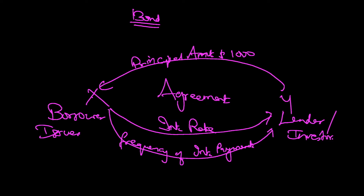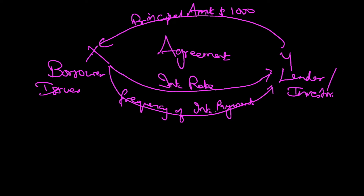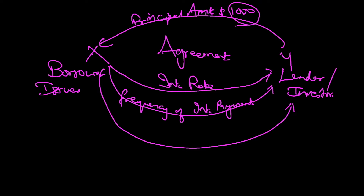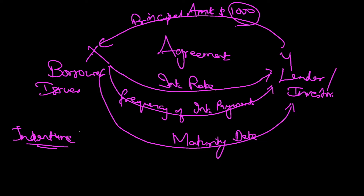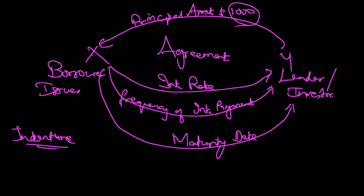How frequently must the interest be paid? Whether it should be monthly, half-yearly, yearly, or quarterly — that frequency will be part of the agreement. And then there's agreement on the maturity date: when will this principal amount be repaid? All these together form part of a bond, and all these will be mentioned in the prospectus. For bonds, the prospectus is called an indenture — I-N-D-E-N-T-U-R-E. The indenture will have all the terms and conditions of the bond.